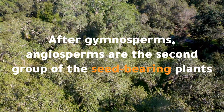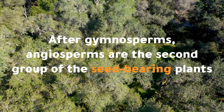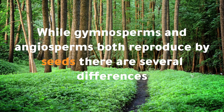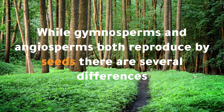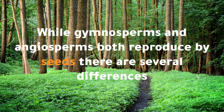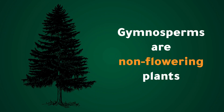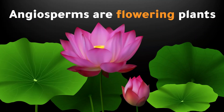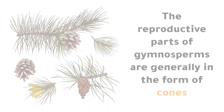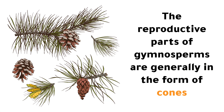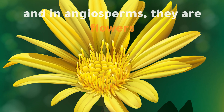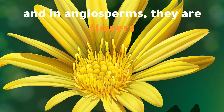After the gymnosperms, angiosperms are the second group of the seed-bearing plants. While gymnosperms and angiosperms both reproduce by seeds, there are several differences. Gymnosperms are non-flowering plants, and angiosperms are flowering plants. The reproductive parts of gymnosperms are generally in the form of cones, and in angiosperms, they are flowers.